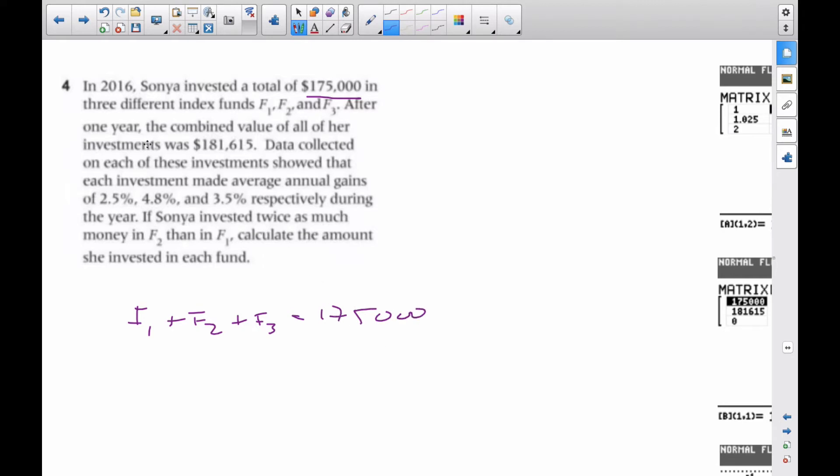After one year, the combined value of all her investments was this much. So after one year, I know it's going to be $181,615, and she knows that each investment made an average annual gain of this much percent.